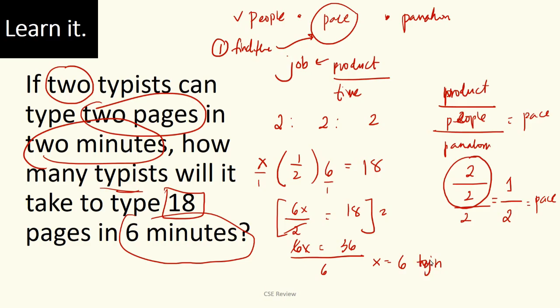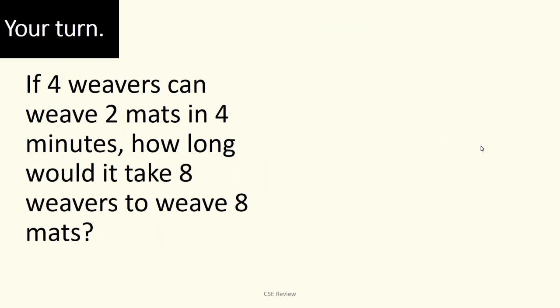Six typists—that's what we're looking for, that's the answer. That means six people can type 18 pages in six minutes. That is the tricky part of this problem. If you need to watch this video again and again until you figure it out, go ahead. You get the pace by knowing how much one person can do. In this case, since two people made two pages in two minutes, we divide: product over people over time. Here's the sample question for you to try—hit pause now.